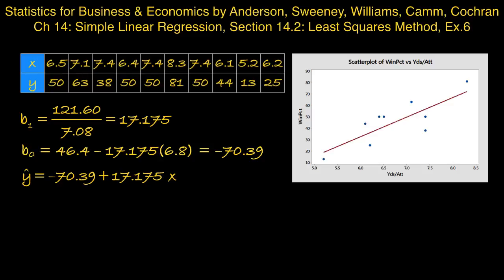The 17.175, on the other hand, does have a practical interpretation. That's the slope, which is the change in Y for a unit change in X. In this context, that's how much we expect the win percentage to change when the yards per attempt increases by one unit.